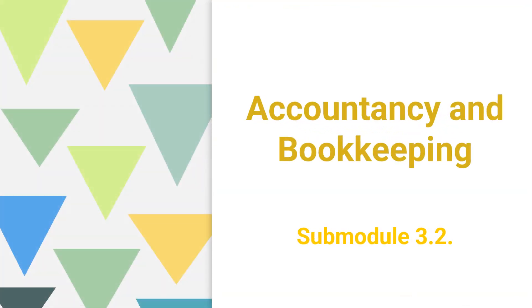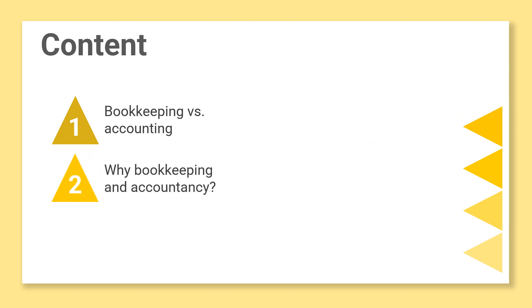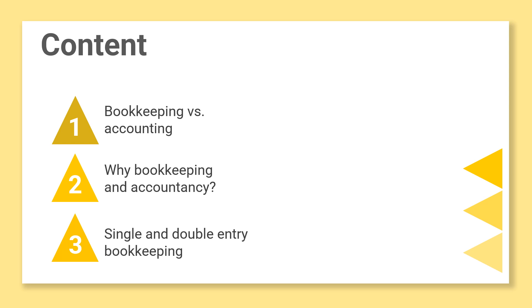In sub-module 3.2, we will look into accountancy and bookkeeping. During this sub-module, we will discuss the differences between accountancy and bookkeeping and why they are important for the management of your NGO. We will then mention the principles of single and double-entry bookkeeping and we will try to clear up the confusion around the two little words, debit and credit.